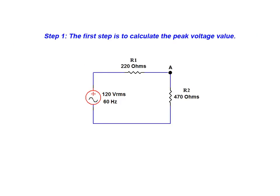The first step in this solution is to calculate the peak voltage value. This is accomplished by multiplying the provided RMS source voltage by a factor of the square root of 2. The resulting peak voltage for this source is 169.7 volts.